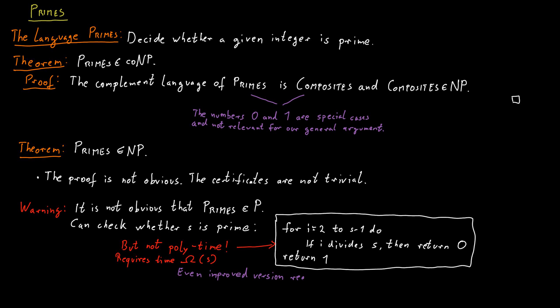But still, our running time would be at least in the order of square root s. This might look polynomial, but it is polynomial in the value of s, but it's not polynomial in the input encoding.